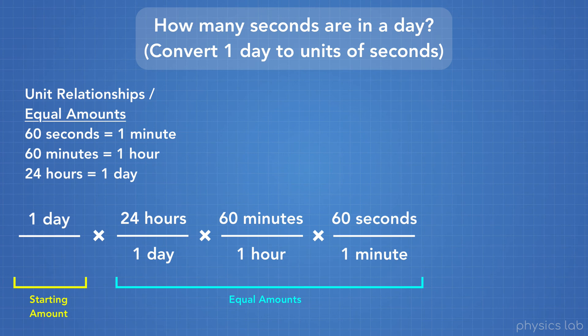And again, these are all multiplied together. Now, we mentioned that we could write these relationships either way. For example, 24 hours per 1 day, or 1 day per 24 hours. So how do we know which way to write it? How do we know which one goes on top when we're writing these fractions?